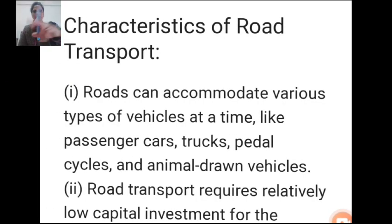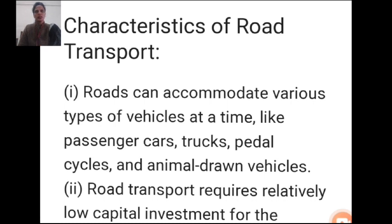Characteristics of road — what are the features that a road should have? We will discuss them one by one. First: a road can accommodate various types of vehicles at a time, like passenger cars, trucks, paddle cycles, and animal-drawn vehicles.